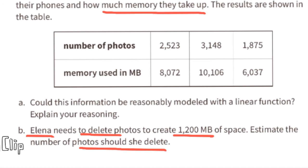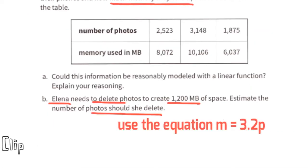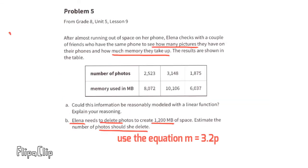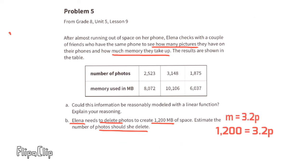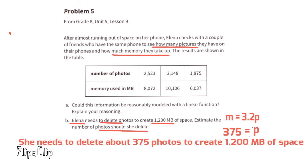Part b: Elena needs to delete photos to create 1,200 megabytes of space. Using M = 3.2P, substitute 1,200 for M: 1,200 = 3.2P. Dividing both sides by 3.2, she needs to delete about 375 photos to create 1,200 megabytes of space.